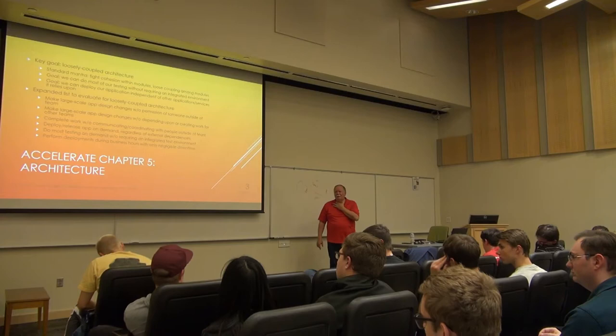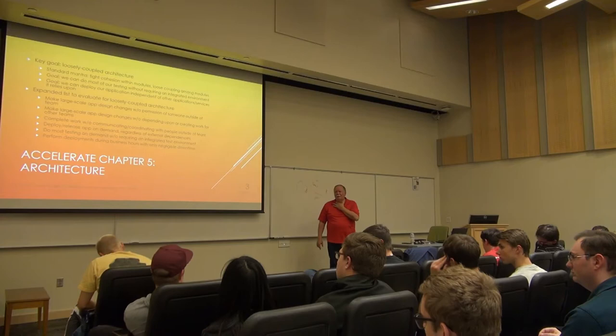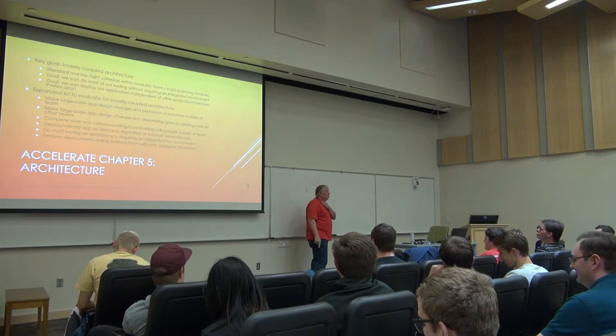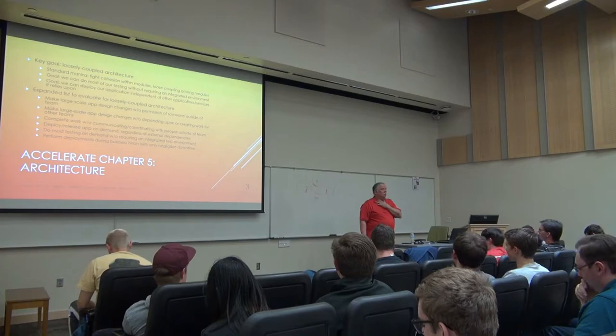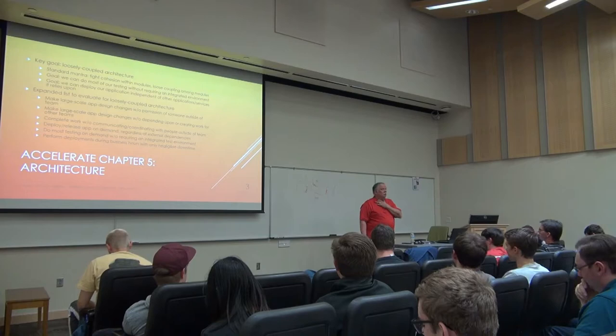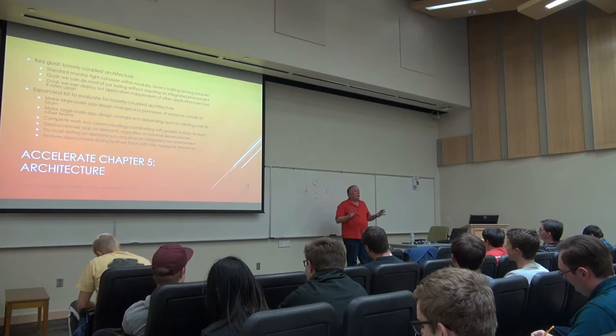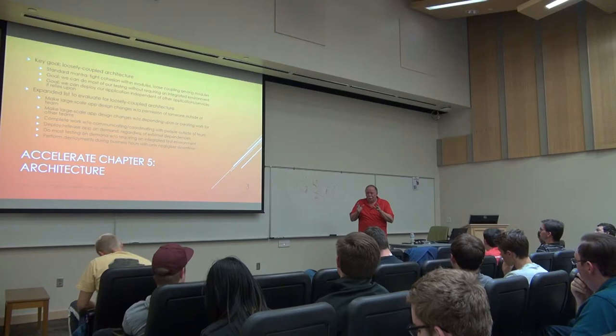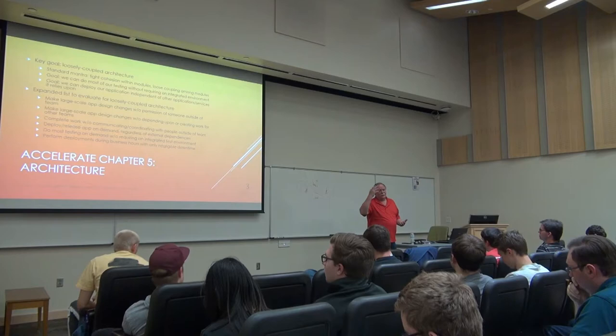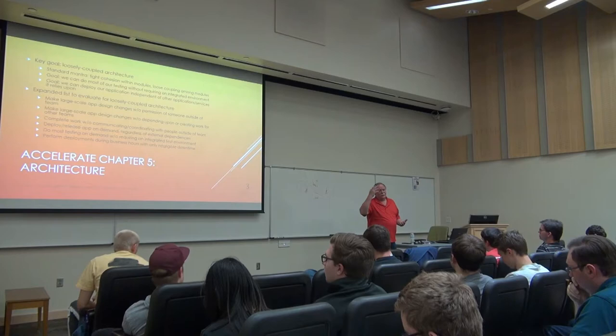I think it's Amazon that has the two-pizza rule - no team should be large enough that two pizzas can't feed them. That is an excellent rule. You don't want big teams, you want small teams. If you take this overall architectural approach, that allows you to create small teams that can work as a tight team. The ideal team size for software is about three or four people. But if the task is big enough, that's something Brooks addressed early on in Mythical Man-Month - how do you organize it? I'd say three pizzas.